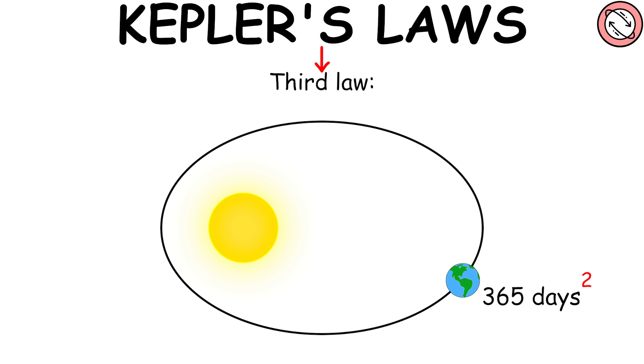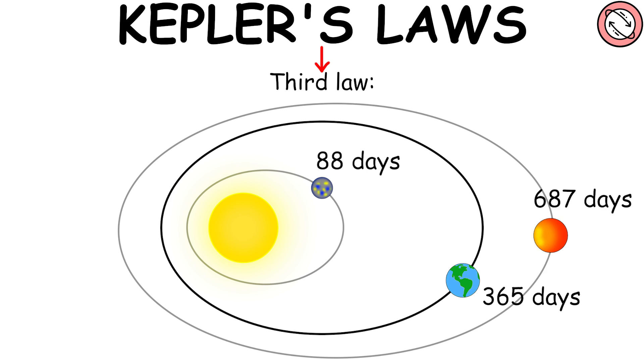The third law states that the squares of the orbital periods of the planets are directly proportional to the cubes of the semi-major axes of their orbits. This implies that the period for a planet to orbit the sun increases rapidly with the radius of its orbit.